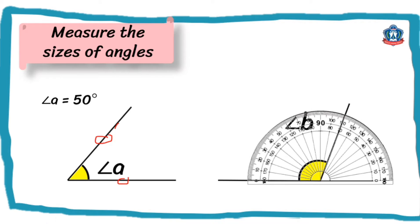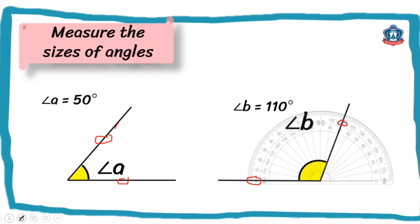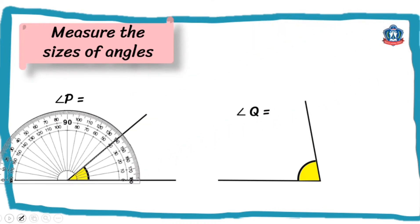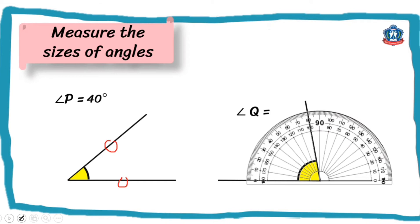Another example — let's measure other angles. We have angle B and angle Q. For angle B, we will use the inner scale starting from 0 — as you can see, this is 40 degrees, so angle B is 40 degrees. How about angle Q? For angle Q, we use the outer scale, starting from 0 — and it ends at 80 degrees. So that's how to use a protractor using the outer and inner scale.